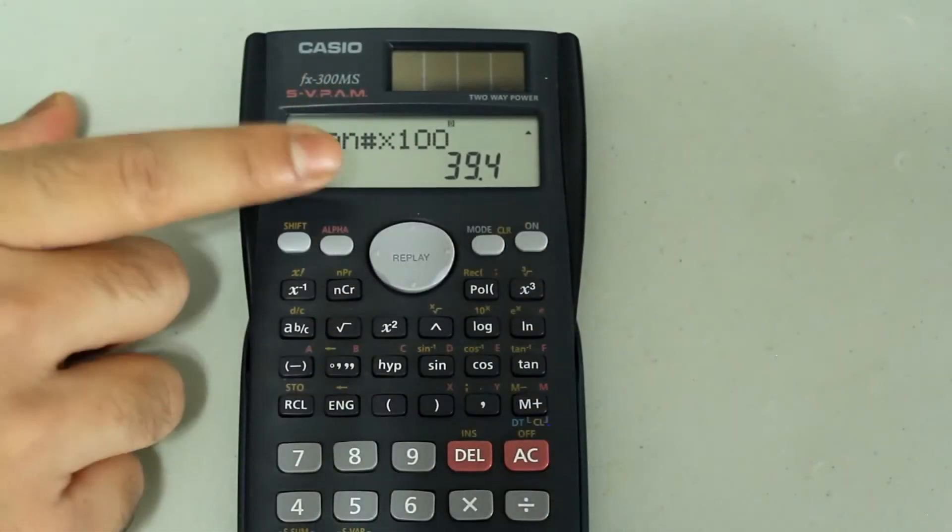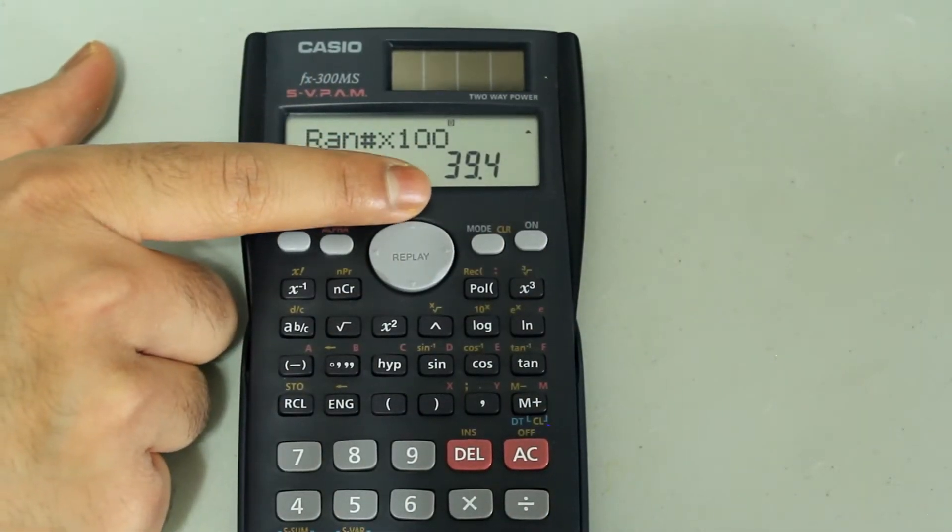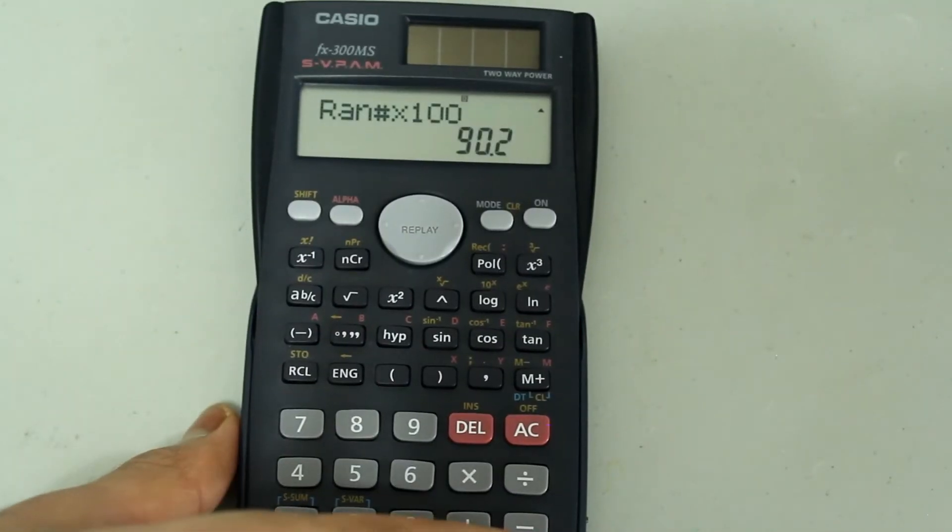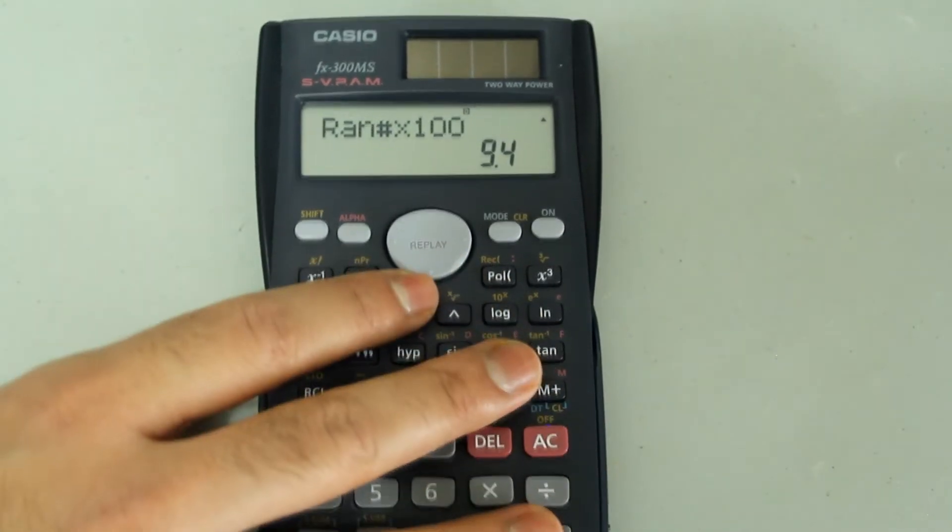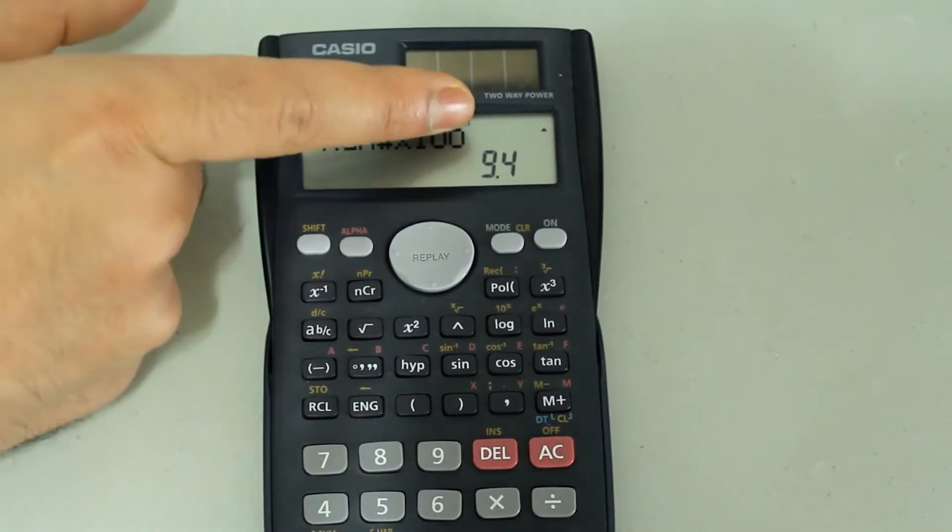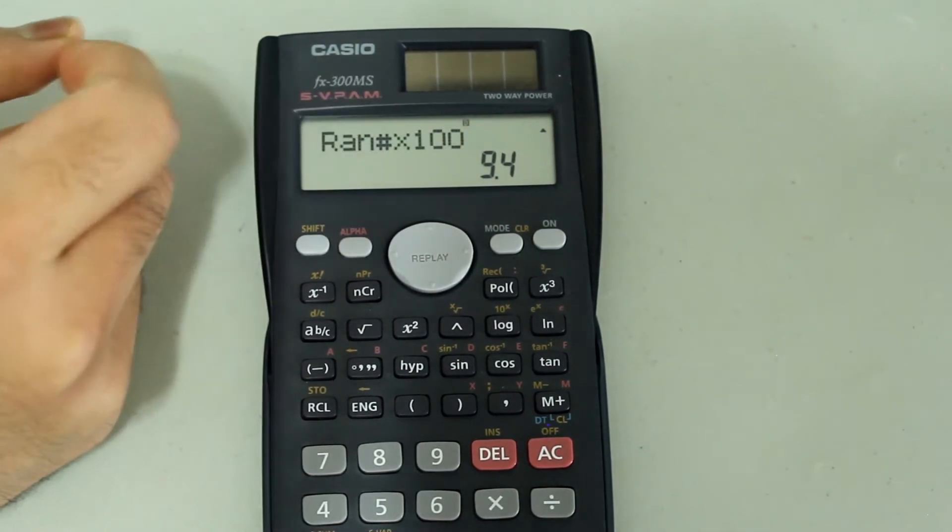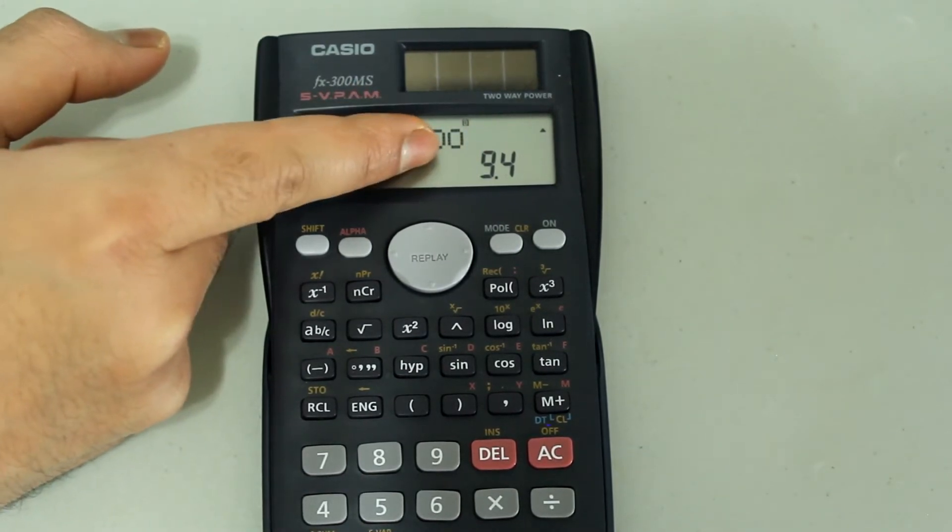You're going to see that a number is generated between 0 and 100. If you continue to press the equal sign, more numbers continue to be generated. One thing you'll notice is that there are decimals with these numbers that are being generated.